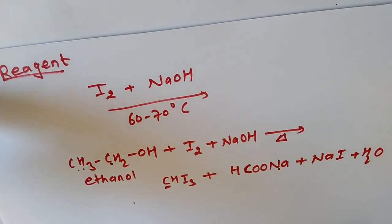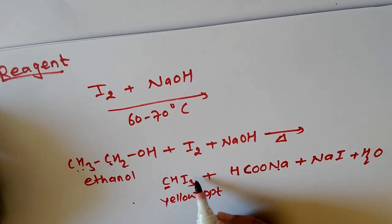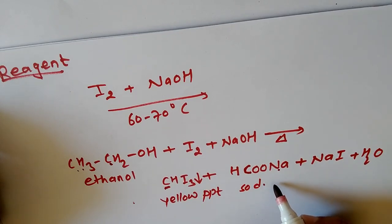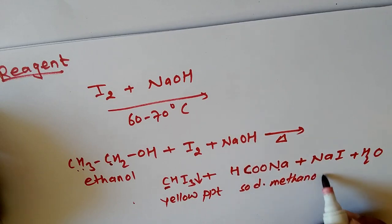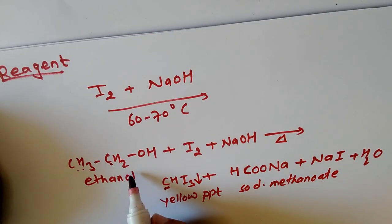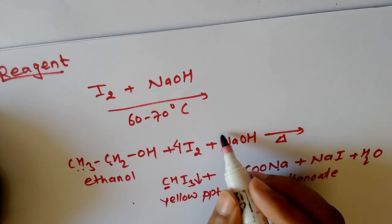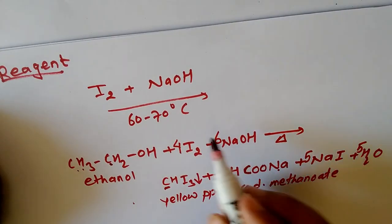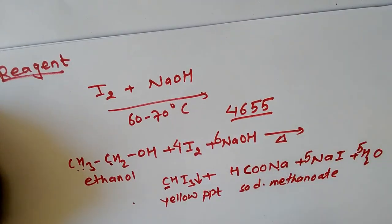The Iodoform (CHI3) is a yellow precipitate. The sodium salt formed is sodium methanoate. To balance this Iodoform test reaction, we use coefficients 4, 6, 5, 5 — that is 4 I2 and 6 NaOH on the reactant side.